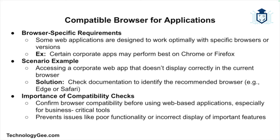Let's now talk about browser compatibility. Some web applications require specific browsers or browser versions to function correctly. For instance, certain websites might only work well in Chrome, while others are optimized for Firefox. If you're accessing a corporate web application that doesn't display correctly in your current browser, checking the application's documentation might reveal it works best in a different browser like Edge or Safari. Before using certain web-based applications, it's important to confirm which browsers are compatible, especially for business-critical tools.